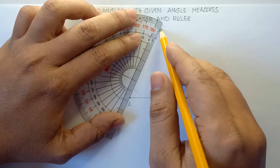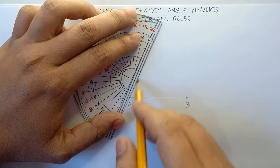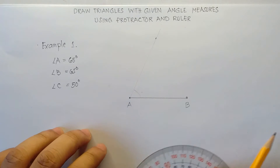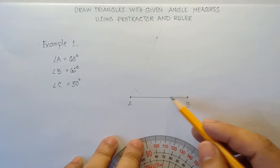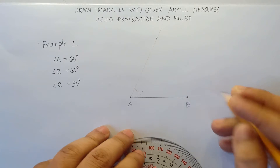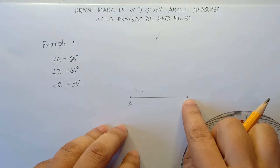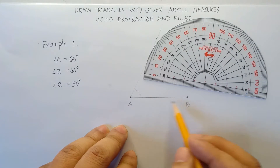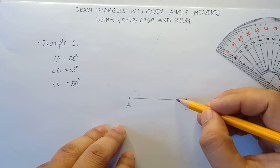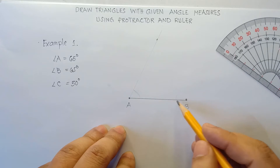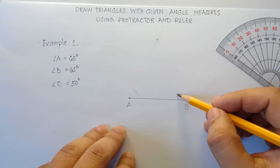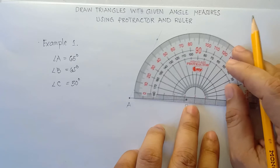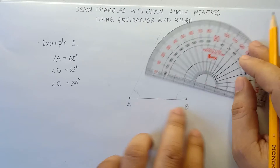Now next step, you need to find the measure of angle B. Align the center part of your protractor at point B, and then align 0 in this horizontal line because your angle forms like this — going to the left. So center part at point B, align 0 in the horizontal line.